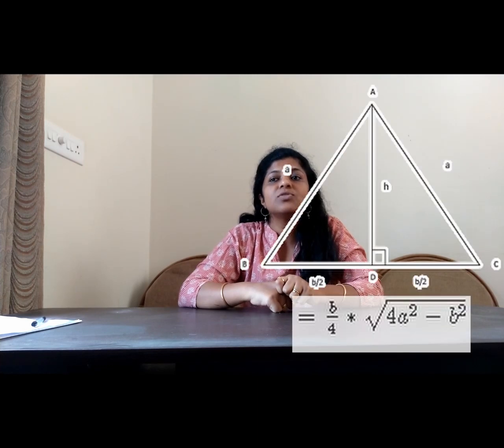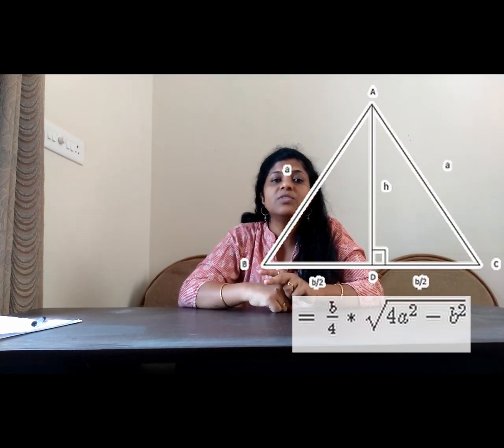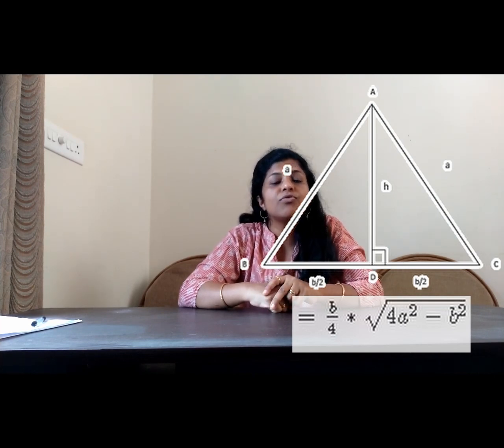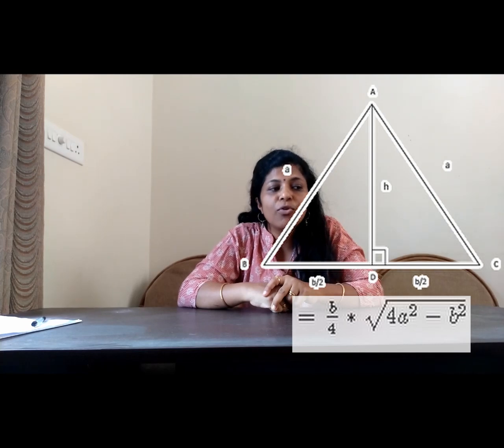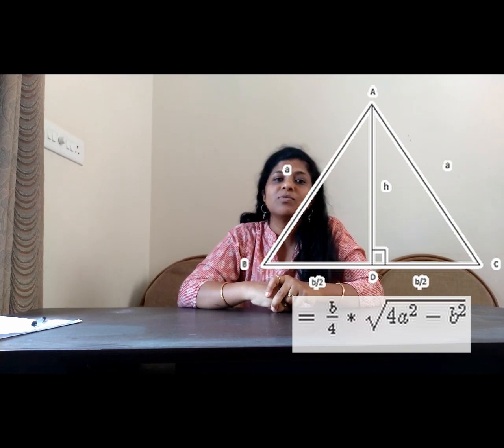The next one is isosceles triangle. Isosceles triangle, two sides are equal. So, the same sides, we will take it as A. The other side is B. Therefore, the formula is 1 by 4 into B into square root of 4A square minus B square.